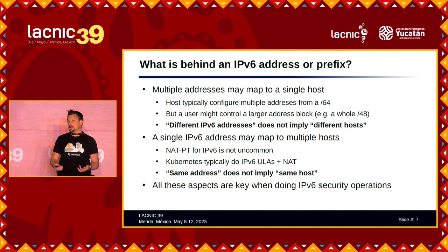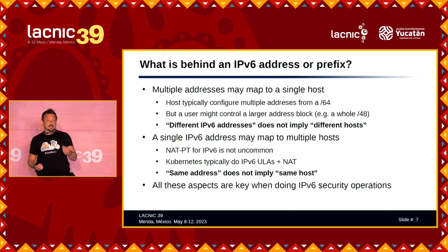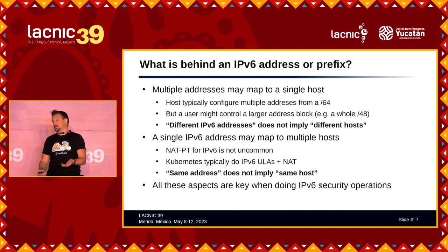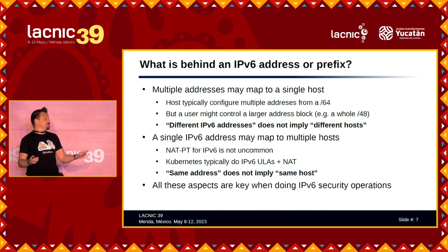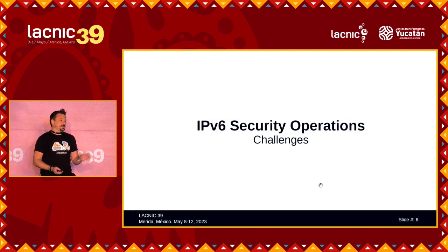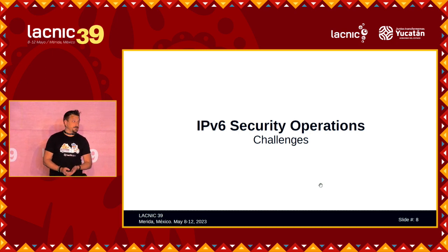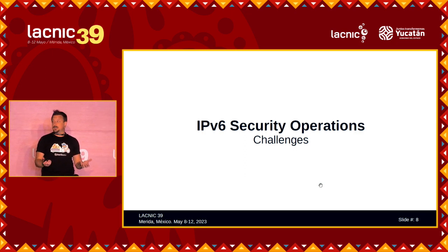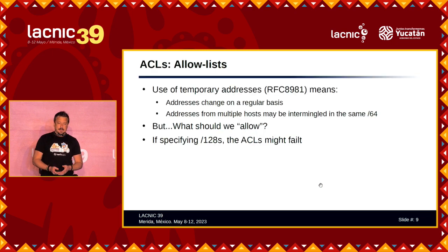For good or for bad, when we detect multiple activities with the same origin address, this need not imply it is the same system. All these ideas are fundamental when doing network operations, because we apply access control rules based on addresses and what those addresses are supposed to identify. Let us now look at those two large areas — access control and network correlations — to identify and discuss the challenges we face.